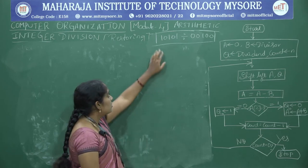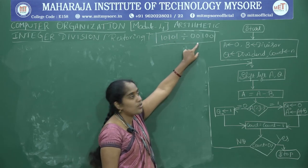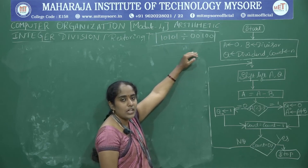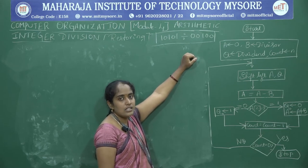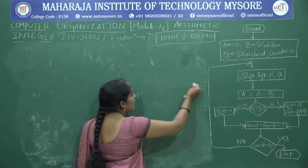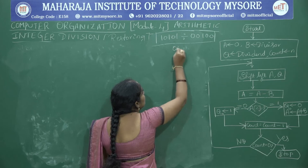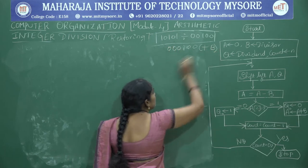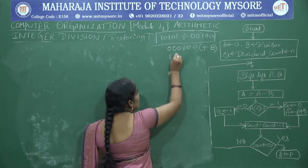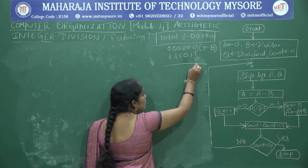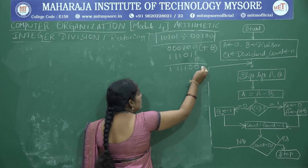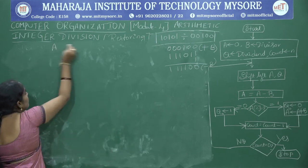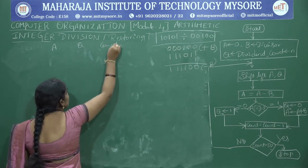Take the next example: 10101 divided by 00100. Both dividend and divisor contain 5 bits, so A is initialized to 6 zeros. Compute plus B: 000100 extended to 6 bits. Minus B: take 2's complement of 000100 — 1's complement is 111011, add 1 to get 111100. A contains 6 zeros, Q equals 10101, count equals 5.